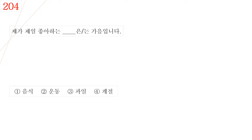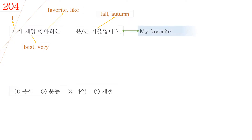Question No. 204. Let's read the dialogue first. 제가 제일 좋아하는 무엇은 가을입니다. In the first dialogue, 제가 means I, 제일 means best or very, 좋아하는 means favorite or like, and the next word, 가을, means fall or autumn. So the sentence means my favorite something is fall.